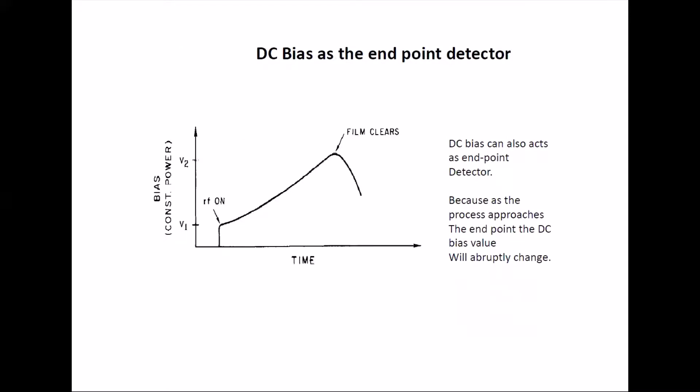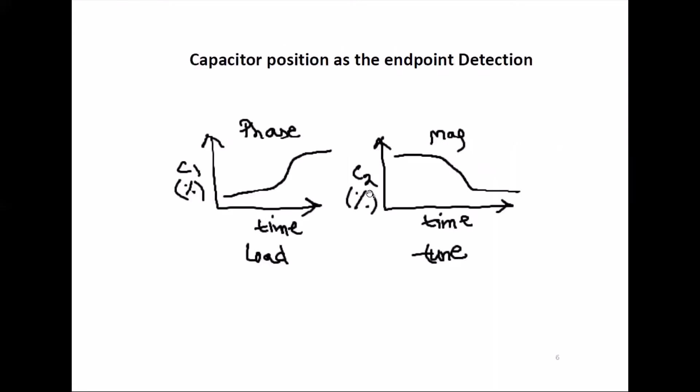Another thing you can see is the DC bias. There will be some DC bias developing across the electrodes. Normally what happens is it will keep increasing or be stable, but as soon as your etching is complete or the wafer is clear, it will start to decrease or go to some other constant level. This is also a design endpoint detector.